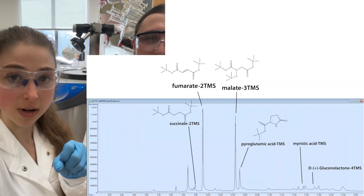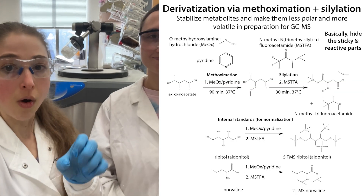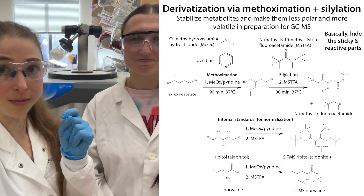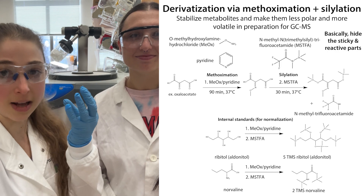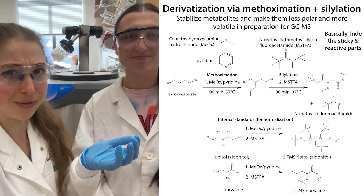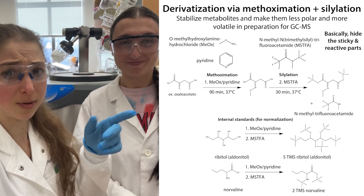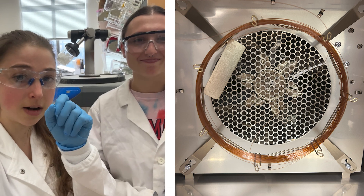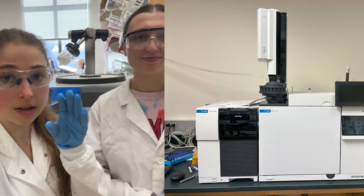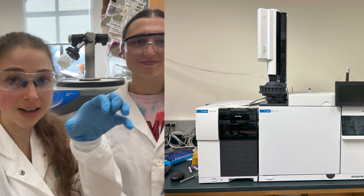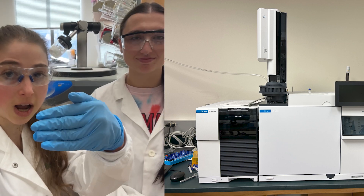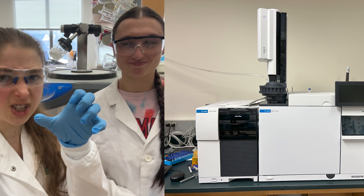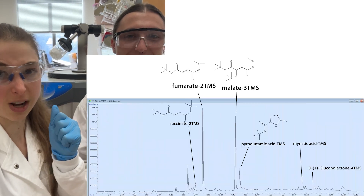Before we can do that, we need to treat these molecules with chemicals that are going to make them volatile — so they will vaporize, which is what you need for gas chromatography. Those vapors go through a column, then they get ionized, and magnets direct the charged ions to a detector. You get m/z, the mass-to-charge ratio of those pieces, and you can figure out what they are.